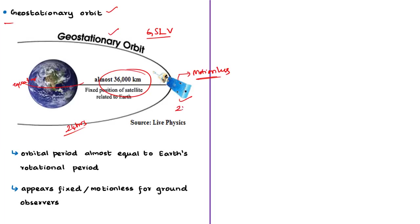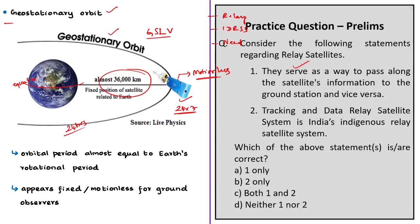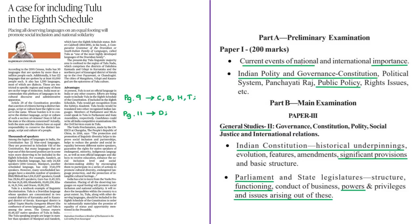So in the context of this news article, we discussed the concept of a relay satellite, then about IDRSS, and then its need for Gaganyaan and for other low earth orbit satellites. With this we have come to the end of analysis of this news article. The displayed practice question will be discussed at the end of the session. Now let us proceed to the next news article analysis.